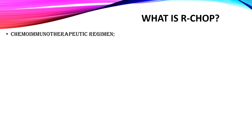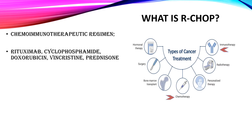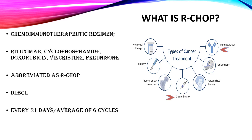So what is R-CHOP? R-CHOP is a chemoimmunotherapy regimen that consists of rituximab, cyclophosphamide, doxorubicin, vincristine, and prednisone. R-CHOP is used in different types of lymphoma, including diffuse large B-cell lymphoma and other types of non-Hodgkin lymphoma. The R-CHOP regimen is usually administered once every 21 days for an average of six cycles. It can be given in three, four, or six cycles depending on the protocol and factors such as severity of the disease.